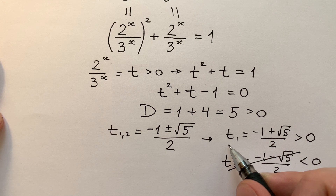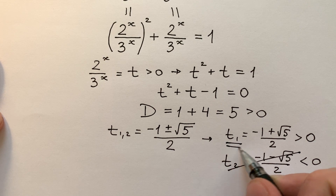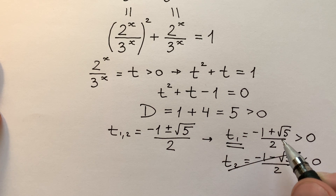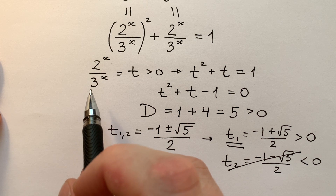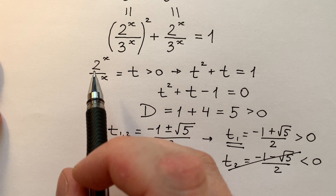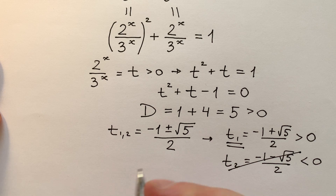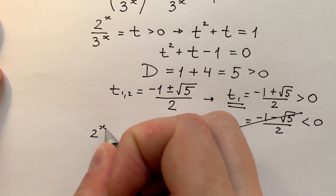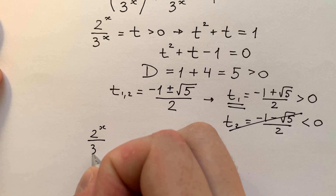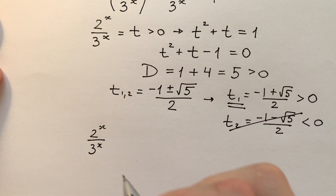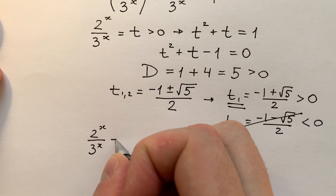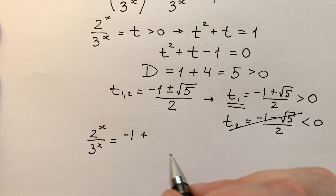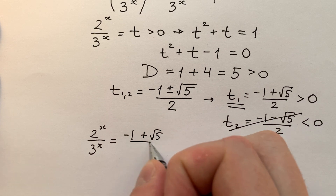We have one and only one solution: t equals minus 1 plus square root of 5, divided by 2. And this equals 2 to the power of x divided by 3 to the power of x. Then, using properties of logarithm, we can finally say that x equals the logarithm base (2/3) of the quantity (minus 1 plus square root of 5) divided by 2.